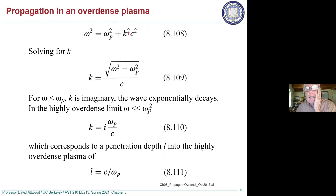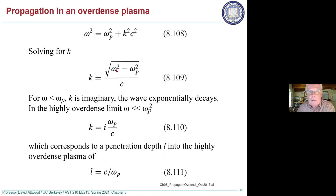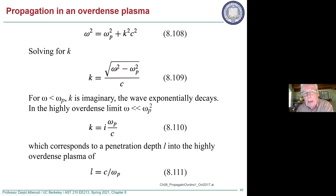We solve the dispersion relationship for k to determine whether it is real — a propagating wave — or imaginary. Solving: k equals the square root of (omega squared minus omega_p squared) over c. When omega is less than omega_p, the solution for k is imaginary. In that simple limit, the imaginary k is omega_p over c. This tells you that the wave would not propagate in this over-dense plasma, and this gives the penetration depth.